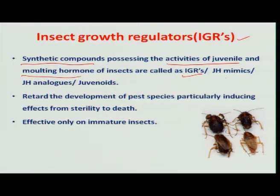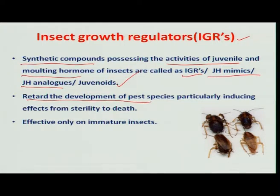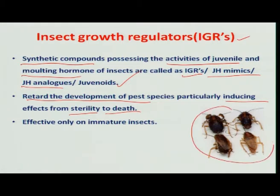These are also called as JH mimics, JH analogs, and also juvenoids. These insect growth regulators retard the development of pest species, particularly inducing sterility and ultimately death of the insects. They are mainly effective on immature insects.